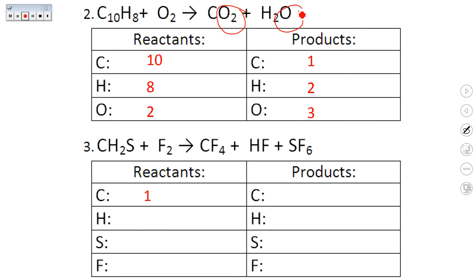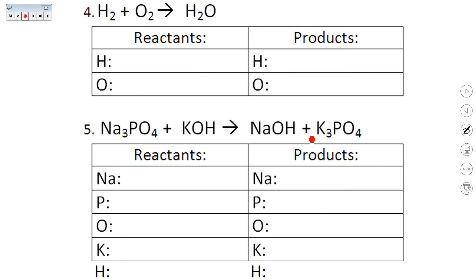For number three: reactant side — one C, two H's, one S, two F's. Product side — one C, one H, one S, and F's: four plus one plus six gives 11. For number four: reactants — two H's and two O's. Products — two H's and one oxygen on the product side.